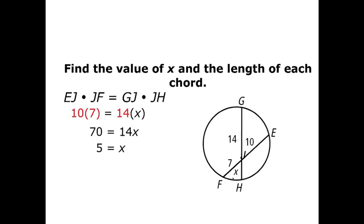Now, I know the length of x, but I also want to know the length of the whole chords. Well, the length of the whole chord, I'm just going to add the parts. So for EF, I'm adding 10 and 7, so I'm going to get 17 for the length of EF. And for GH, I'm adding 14 and x, but we found x to be 5. So I'm adding 14 and 5, which is 19.